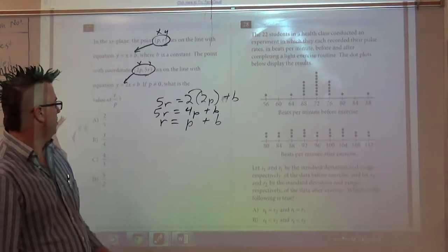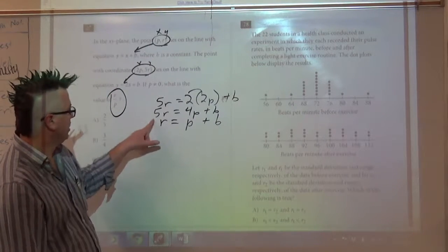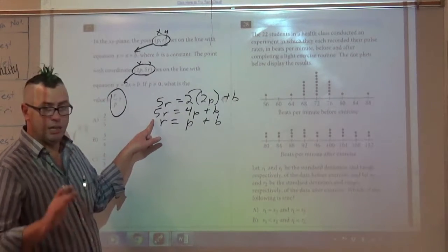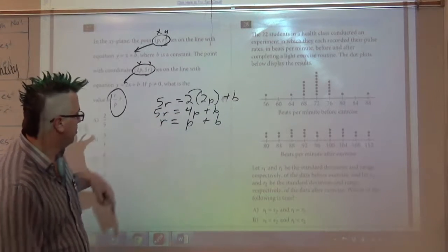Now what I need to do, I need to get something that looks like R divided by P, and I've got two equations. I need to get one equation. So I'm going to subtract this whole bottom equation from the top equation.